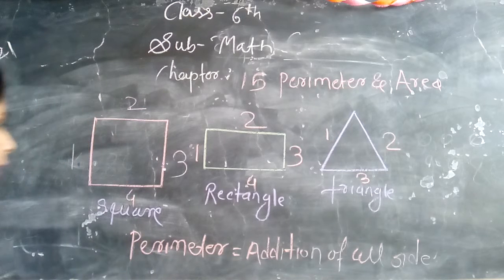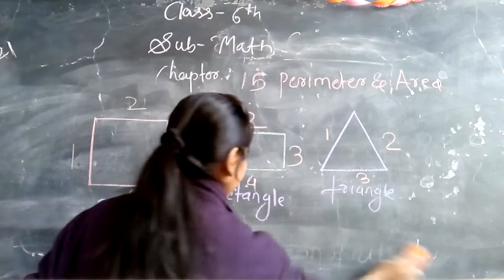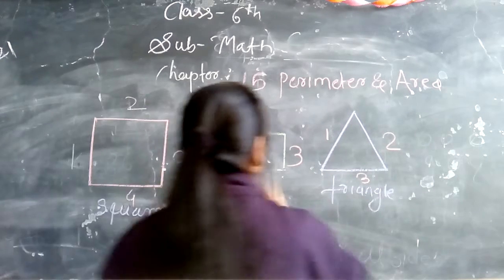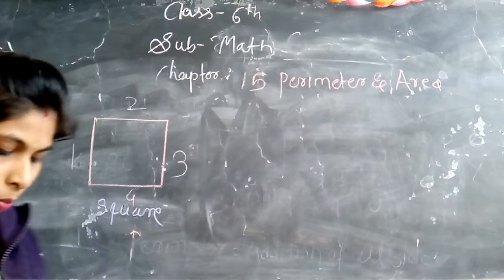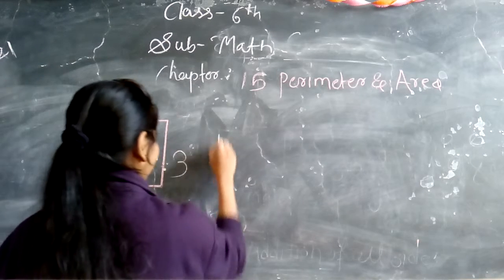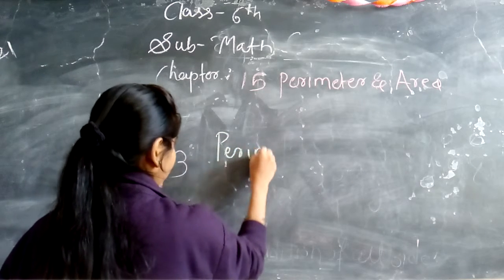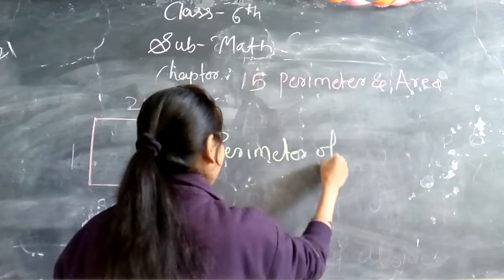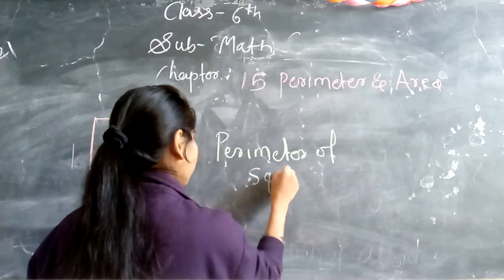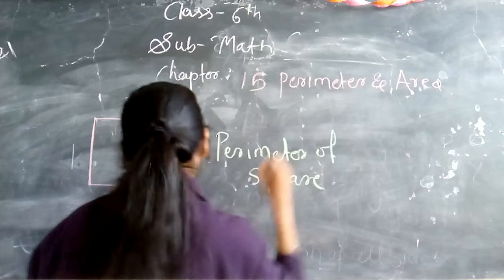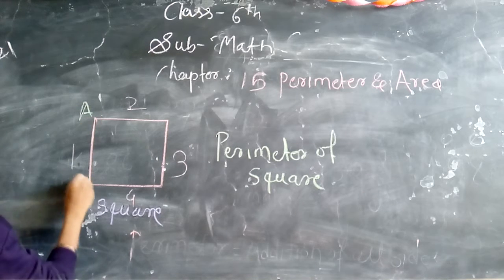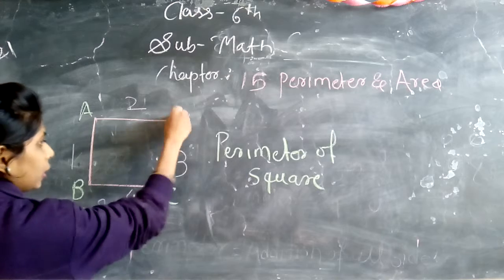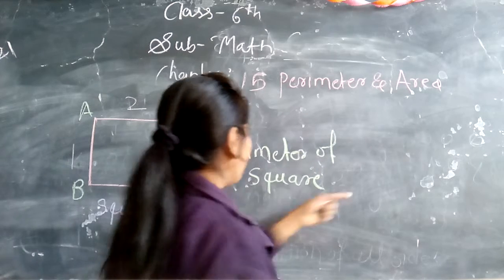Okay students, so now we will go to the perimeter of square. This square is labeled A, B, C, D.